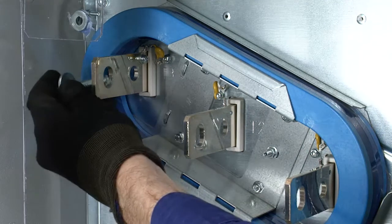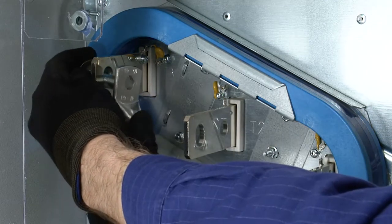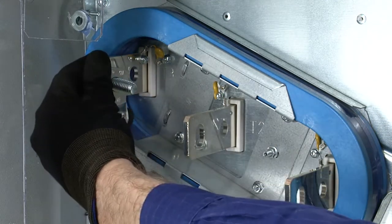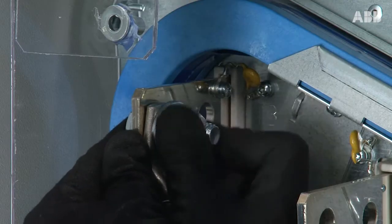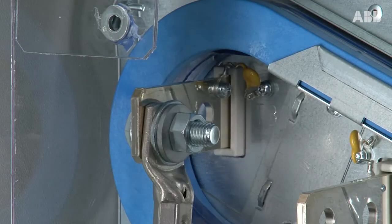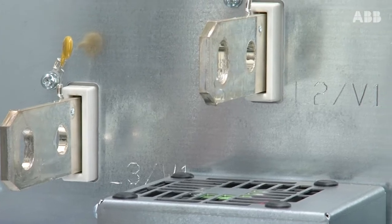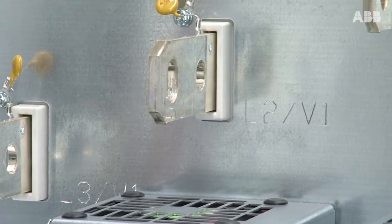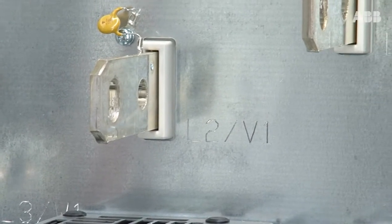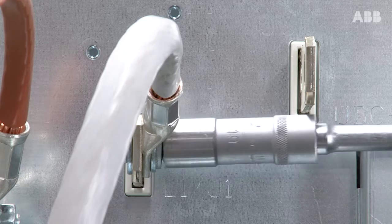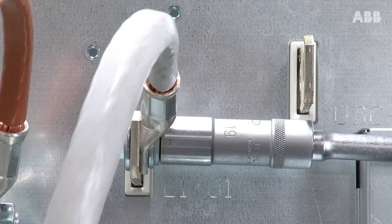The cables can now be fastened to the connection terminals in the module. Start with the motor cable. The phase marking is indicated by each terminal. Finalize the cabling and fasten the bolts to the correct tightness.